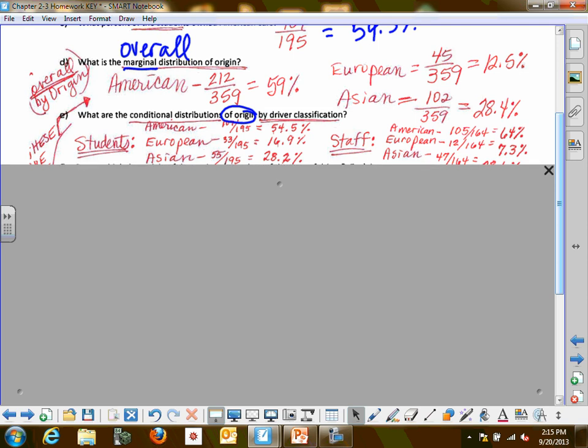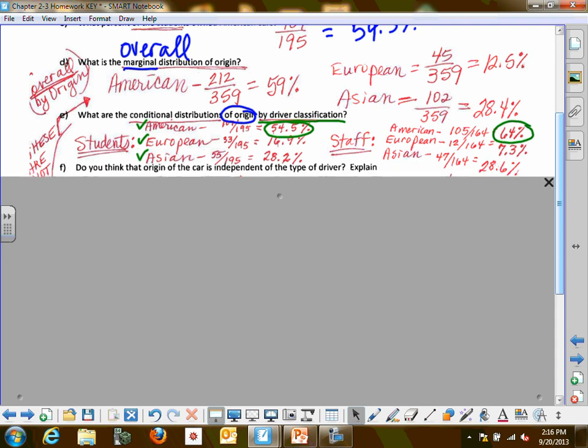If you were using origin as your denominator, then the numbers I would be putting it under are American, European, Asian. However, this is what this means. By driver classification, I'm going to do all of the origins. So I want you to fill those in so we can discuss. I have the percent of students that drive American cars, the percent of staff that drive American cars. I'm going to let you fill that in for just a second.